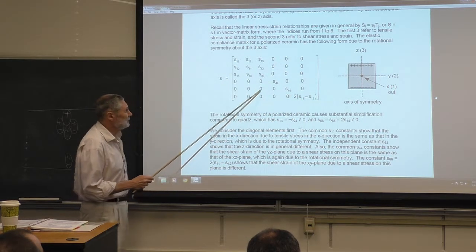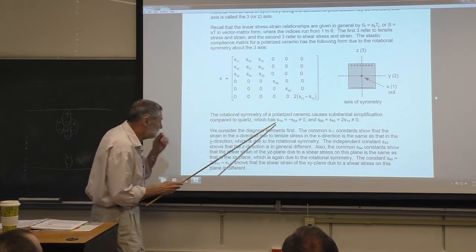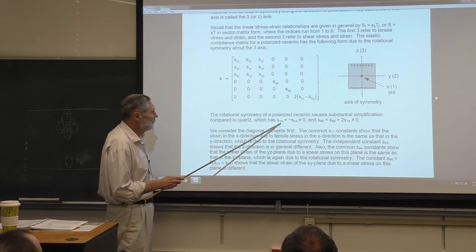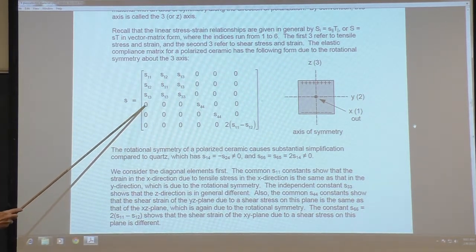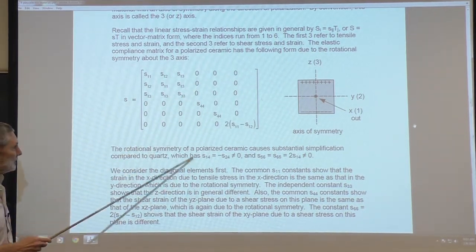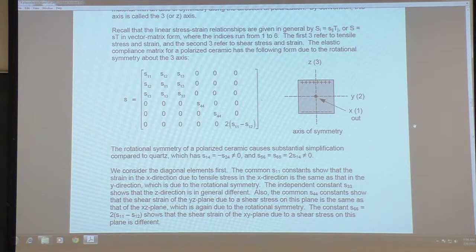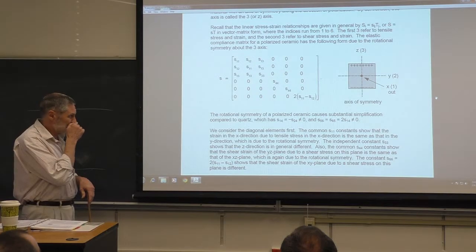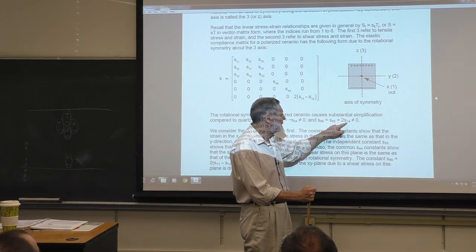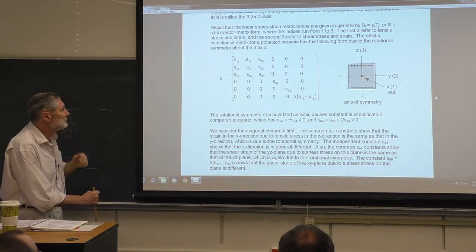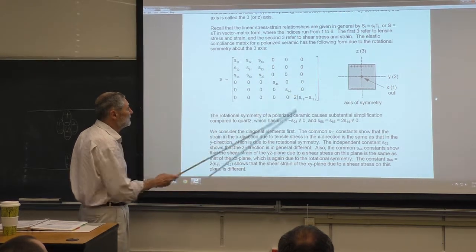Comparing to quartz from earlier pages, this compliance matrix is significantly simpler. Quartz has an S₁₄ and S₂₄ element that are equal and opposite, but here they're zero. Quartz also has an S₅₆ element — and by symmetry S₆₅ — equal to twice the S₁₄ value, but here we also have zeros. The S₅₆ is zero.